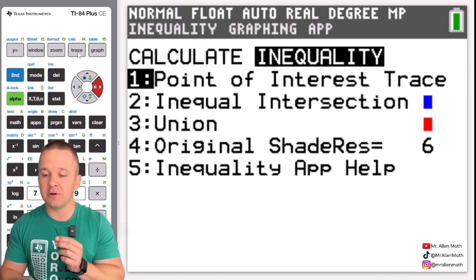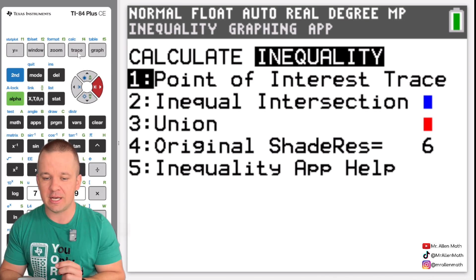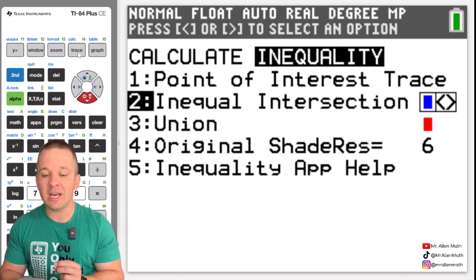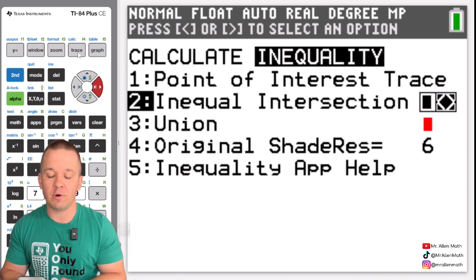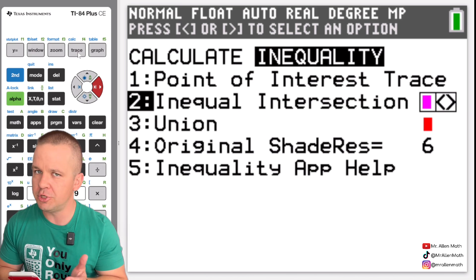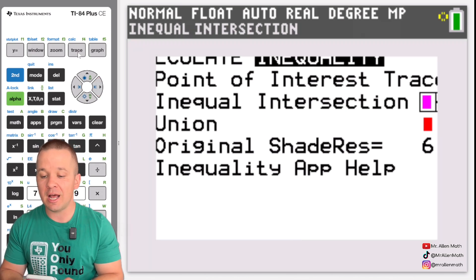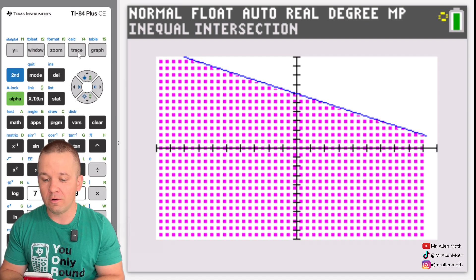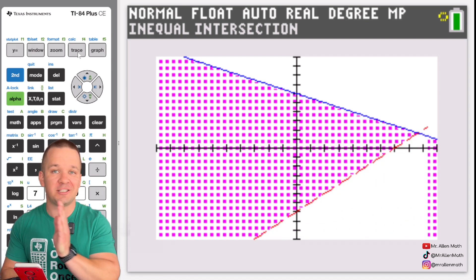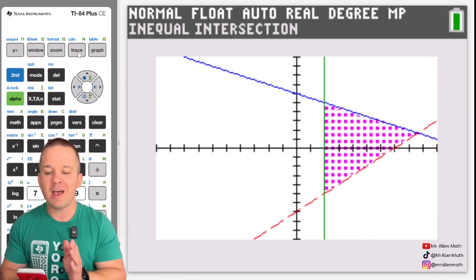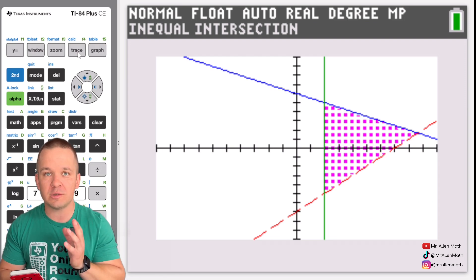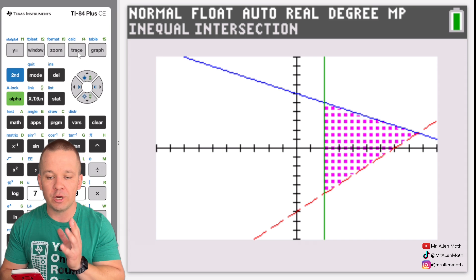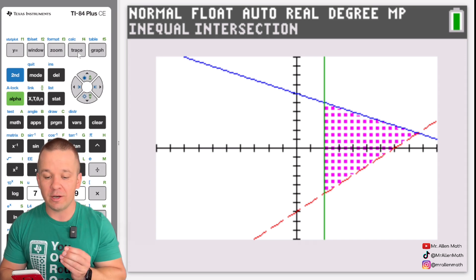So over here we see points of intersection trace and then we also have inequality intersection. Okay so we can change that color to whatever we would like. I'm going to go with the magenta color here since we have not used that. I'm going to hit enter and now it's going to show just that and it cuts it off in real time as it graphs each one which is a super cool visual. So now we can see just our intersecting region of those three inequalities which is super cool.